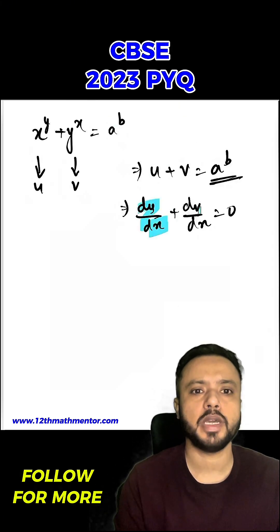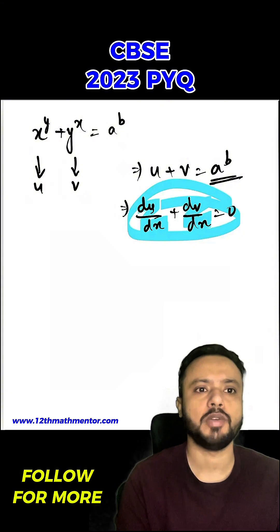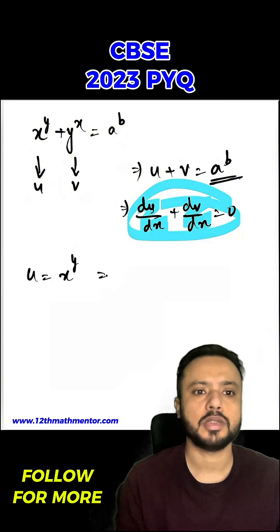So basically, I am going to calculate du upon dx and dv upon dx and then substitute it here and equate it to 0 to calculate the value of dy upon dx. So u is our x raised to the power y, so I can say log u would be equal to y log x and now I am going to differentiate both sides with respect to x.